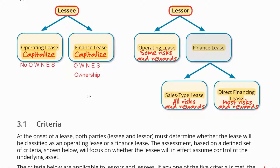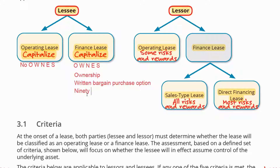For the N criterion — present value of the sum of lease payments — that would be 90% or more of the asset's fair value, including all lease payments and any guaranteed residual value. The guaranteed residual value is when you lease a property and promise the lessor that when you return it, it might be worth a certain amount — say $1 million — and if not, you compensate them for the difference.